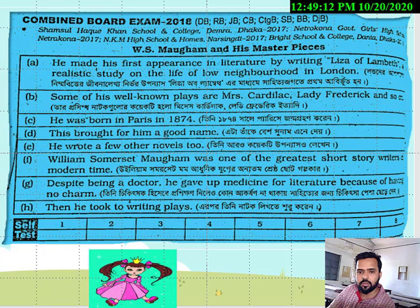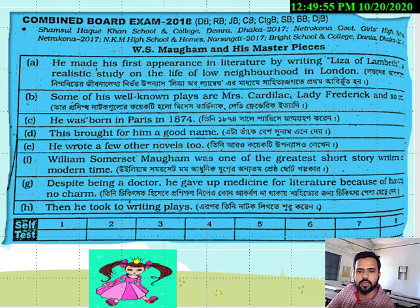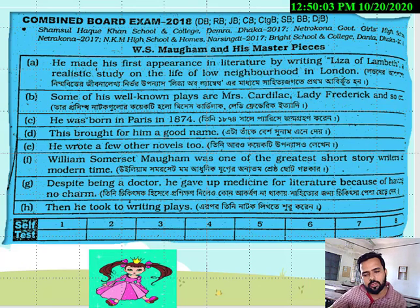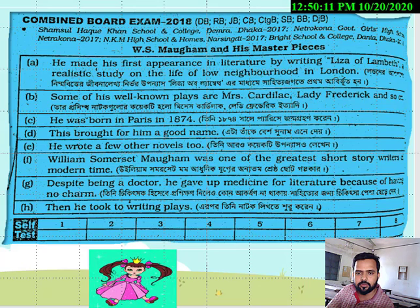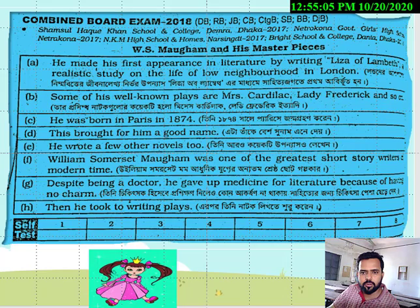Did he write only one book? Of course he wrote more novels. Besides writing novels, he also wrote some dramas. The dramas which William Somerset Maugham wrote include Mrs. Cargillette and Lady Frederick. So this is a short biography of our great writer William Somerset Maugham. Now we will try to rearrange it.